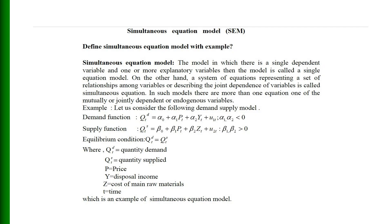As an example, consider the following demand and supply model. The demand function is: QD_t = α₀ + α₁P_t + α₂Y_t + u₁_t, where α₁ and α₂ are less than zero. The supply function is: QS_t = β₀ + β₁P_t + β₂Z_t + u₂_t, where β₁ and β₂ are greater than zero. The equilibrium condition is quantity demanded equals quantity supplied, where P is price, Y is disposable income, Z is cost of raw materials, and t is a time index.